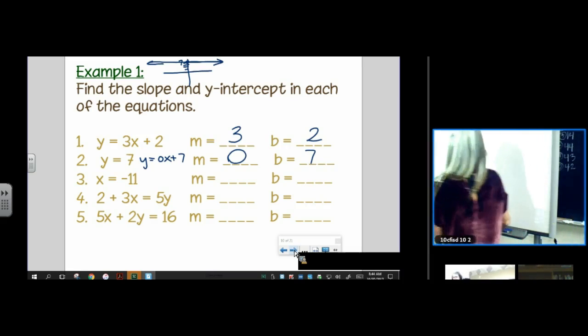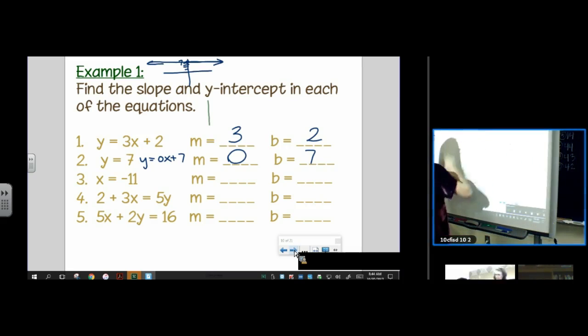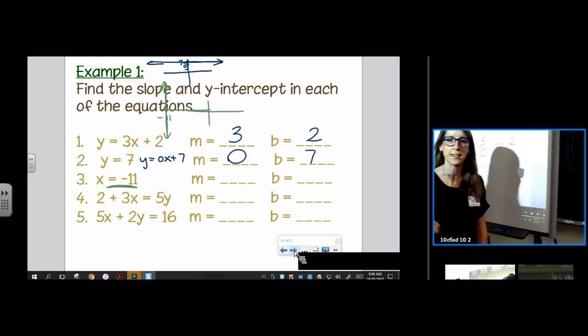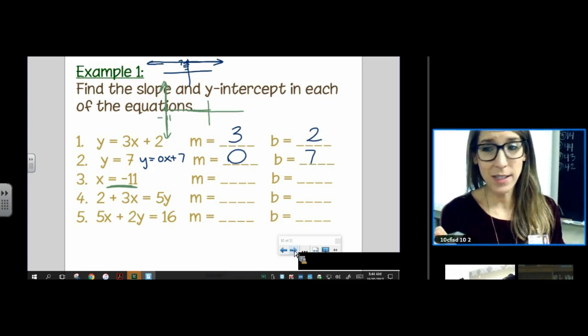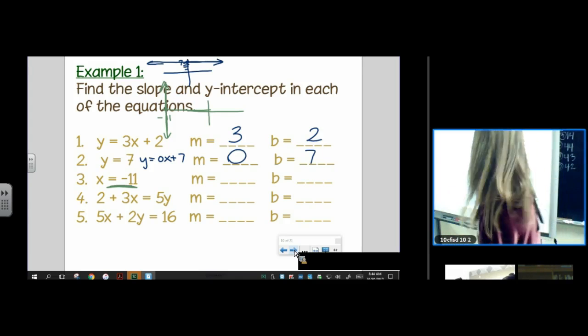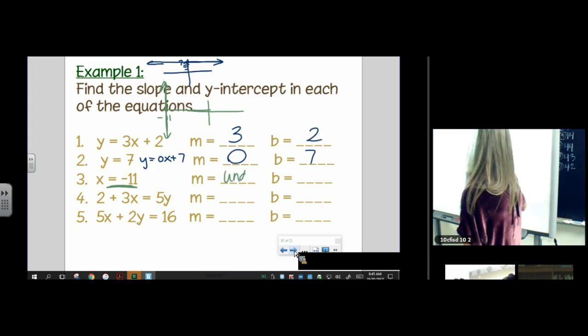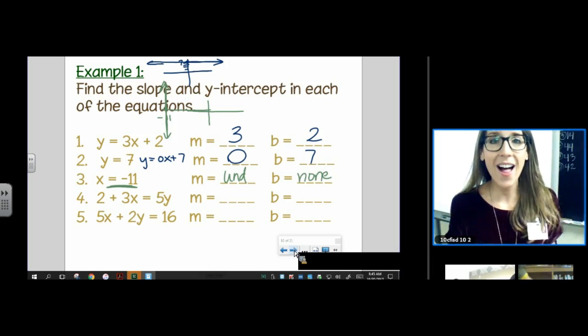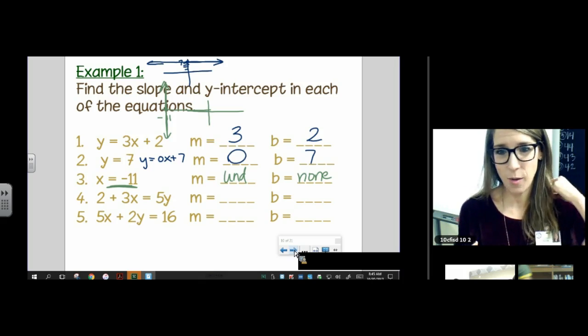Same thing with number three. You could kind of graph it. You go to x equals negative 11. You go there, you put a dot there, and then you stay at negative 11 forever and ever and ever. And you're not allowed to move. That one does not have a slope of zero. That one has a slope of undefined. And that one does not have a y-intercept. It's parallel to the y-axis. So there is no y-intercept.